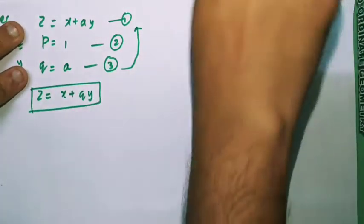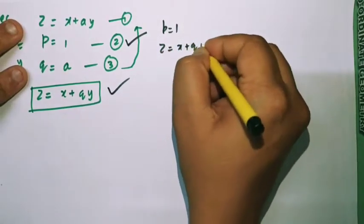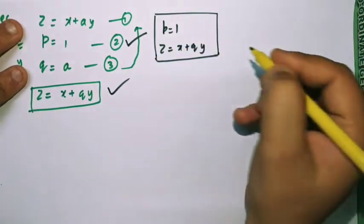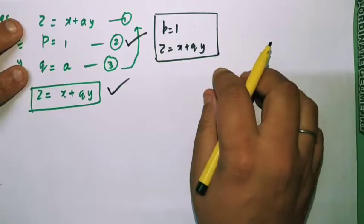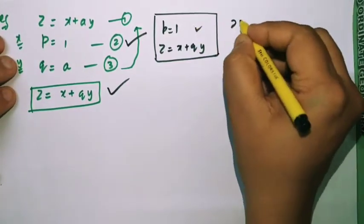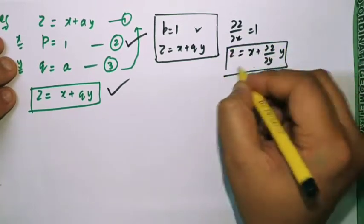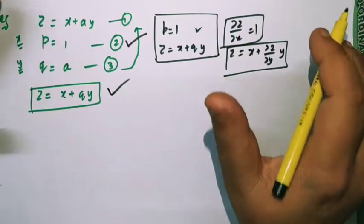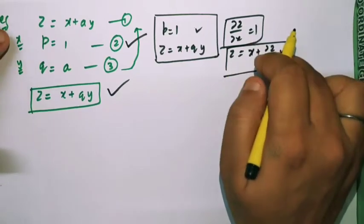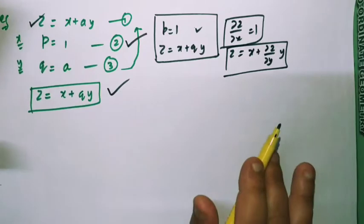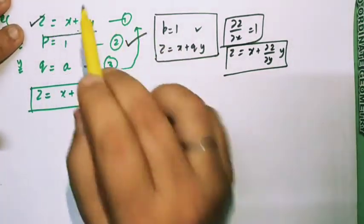Now look at these equations. From equations 2 and 3, the arbitrary constant a is not present. Therefore these give two partial differential equations by eliminating one arbitrary constant: ∂z/∂x = 1 and z = x + (∂z/∂y)·y. So here we got two partial differential equations even though we had only one arbitrary constant, that is a. I will explain further in the next video why more than one PDE can be formed from one equation. Thank you.